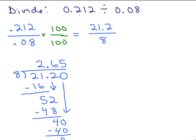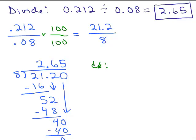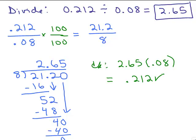So 0.212 divided by 0.08 is 2.65, which we can check. Take the answer times what we divided by: 2.65 times 0.08 using any method — calculator, lattice method, or regular multiplication — and you will get 0.212. So that's the exact answer.